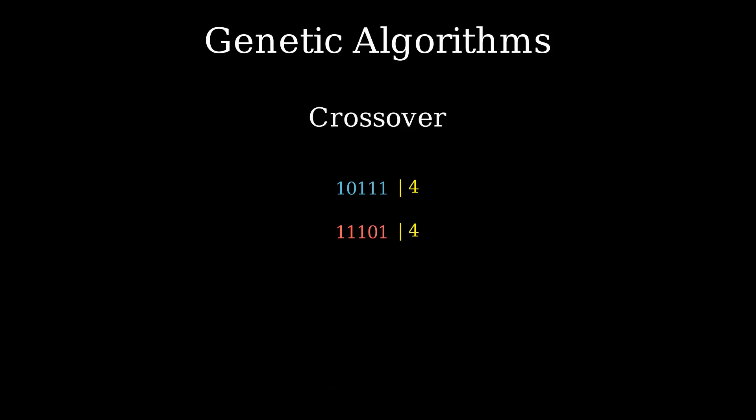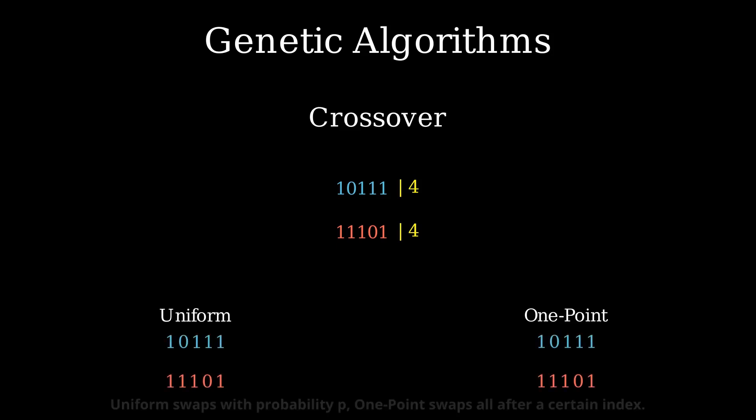Once two parents have been selected, we can perform crossover to create new offspring. The idea is to take two parents and swap out genes in the genome. This can be done uniformly or using one-point crossover, for instance. Each crossover operation produces two offspring per two parents. We can also decide to randomly mutate the offspring by randomly altering a random small amount of genes.